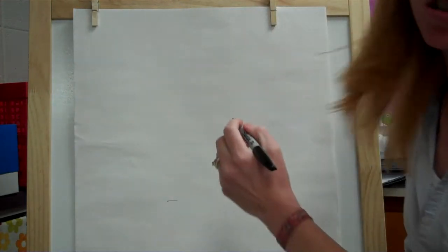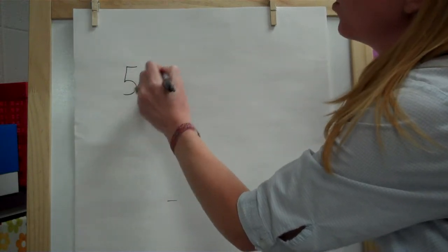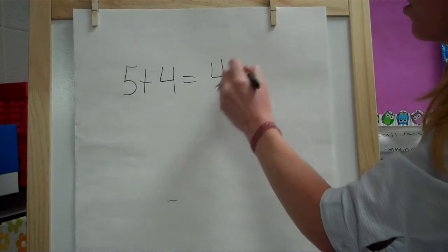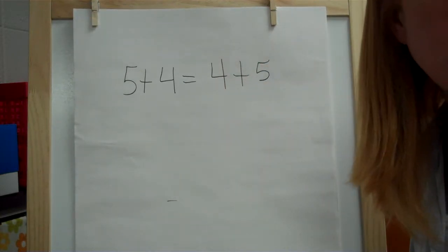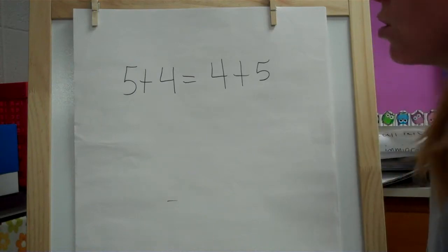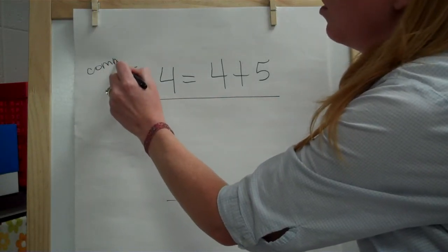Remember we used the commutative property a couple weeks ago and that just said 5 plus 4 equals the same thing as 4 plus 5. And we talked about how that would be easy to use if you wanted to change the order around. So that's the commutative property.